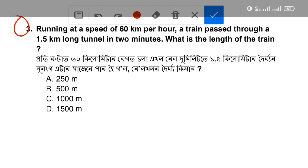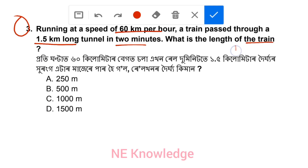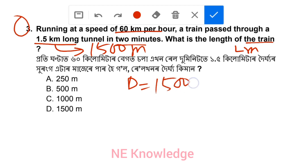Question number 3: A train running at a speed of 60 km per hour passes through a 1.5 km long tunnel in 2 minutes. Find the length of the train. The total distance is 1.5 km plus L meter, where L is the train length. Distance is 1500 meter plus L.